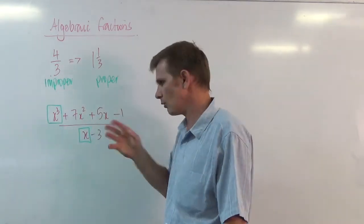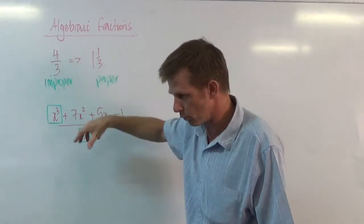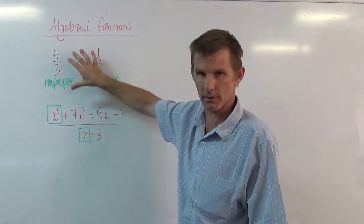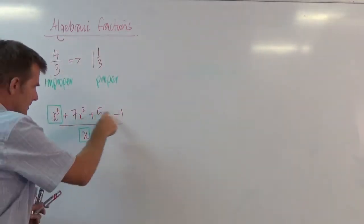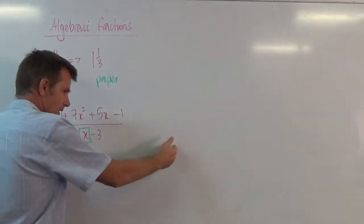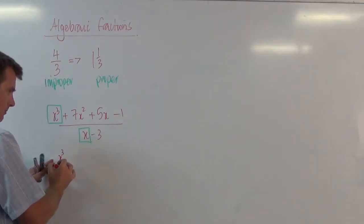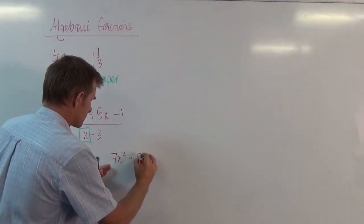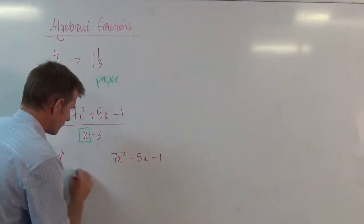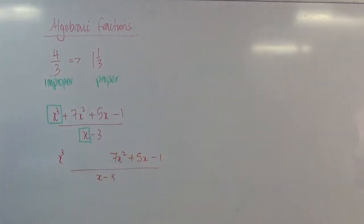So when students struggle with this, I always say to them, just remember, this is all you're doing. It gets a little more complex, but this is all you're doing. So let's crack away here. What I'm going to do, I'm going to rewrite this top line, but I'm going to space it out a little bit. So I'm going to leave my x cubed there for the moment, but I'm going to come along here and I'm going to write my 7x squared plus my 5x minus 1 divided by x minus 3. This just gives me a bit of room to work in here.